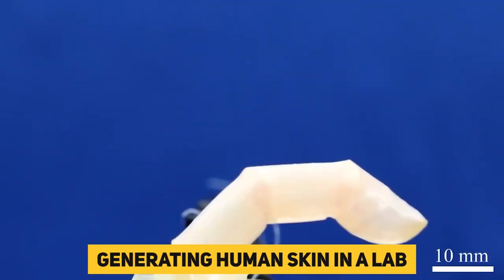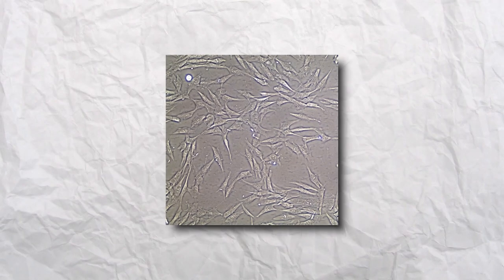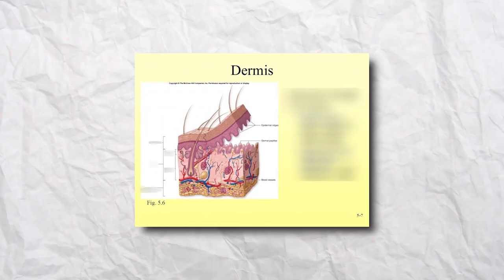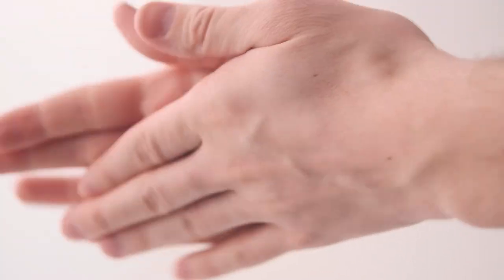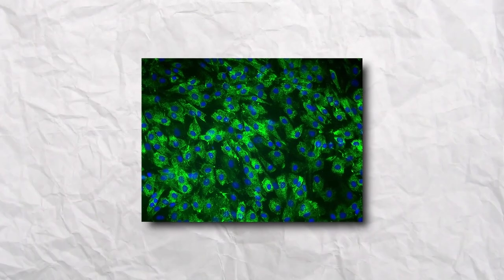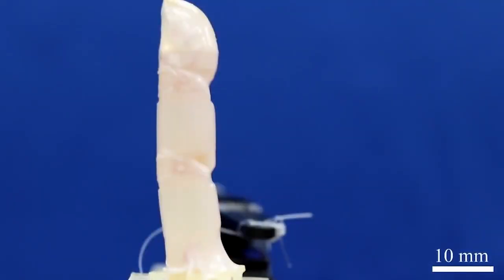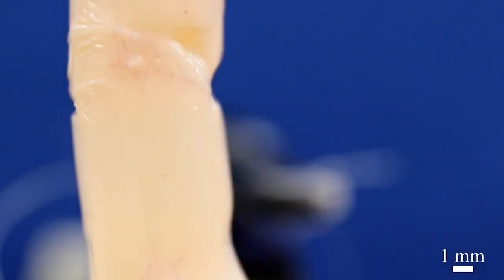Generating human skin in a lab: Professor Takeuchi and his team used dermal fibroblasts and collagen, two essential elements of the dermis, the middle layer of our skin, to generate human-like skin from scratch. The liquid shrank and wrapped around the robotic finger like cling wrap, generating a dermis-like layer.